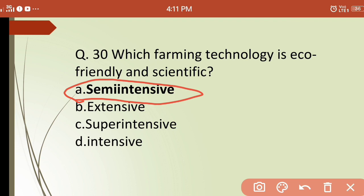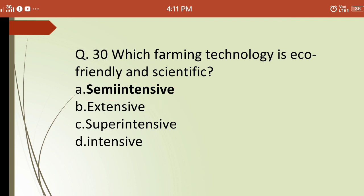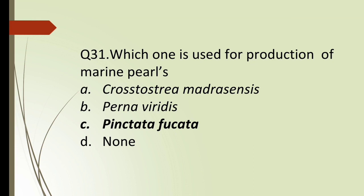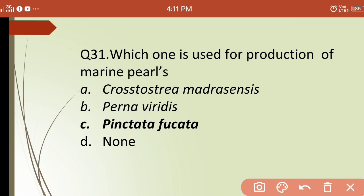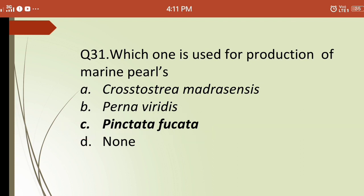Thirty-first question: which species is used for production of marine pearls? Options are: (a) Crassostrea madrasensis, (b) Perna viridis, (c) Pinctada fucata, (d) none. The correct answer is (c) Pinctada fucata. Crassostrea madrasensis is an edible oyster and Perna viridis is a mussel, not a marine pearl producer.